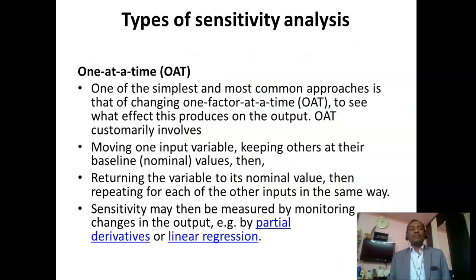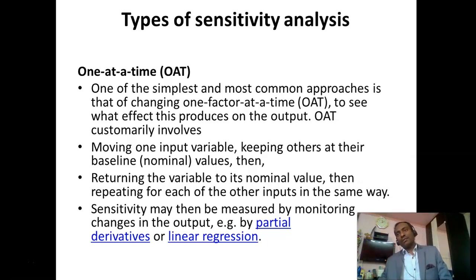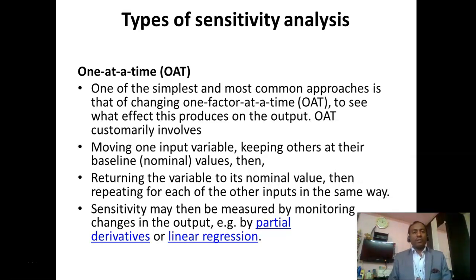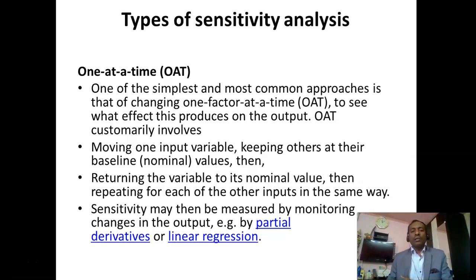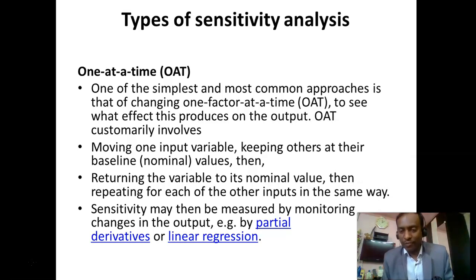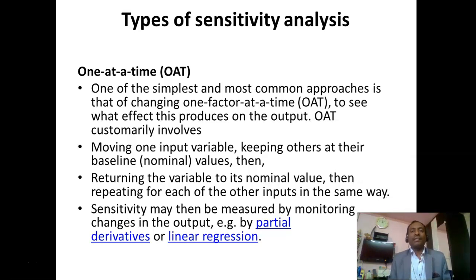What are the different types of sensitivity analysis? We can use the OAT model — that is, One At A Time — where we modulate one parameter and observe the effect on others, one by one. One of the simplest and most common approaches is changing one factor at one time to see what effect is produced on the output. OAT customarily involves moving one input variable while keeping others at their baseline values. These can be done by linear regression method and partial derivative method, using regression analysis, variance, confidence regions, and p-values. Many statistical tools are available to analyze this data.